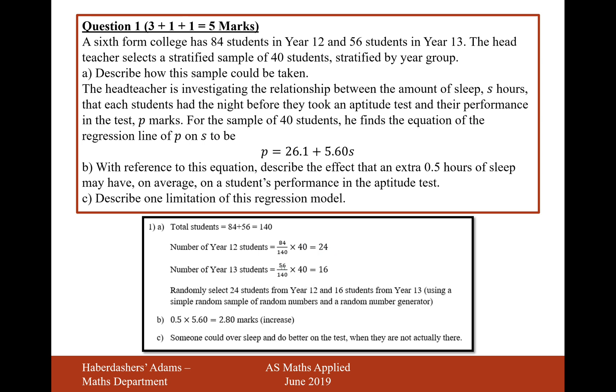We'll do exactly the same thing for the year 13 students. We have 140 in total, 56 of those are year 13. So this is the proportion of year 13 students that we want, and that's going to be of 40 as a sample, so that's going to be 16 students. So you need to randomly select 24 year 12 students and 16 year 13 students.